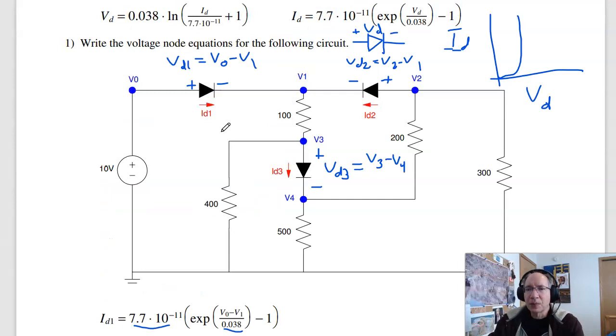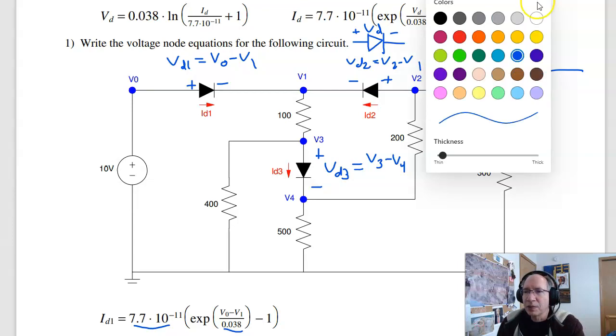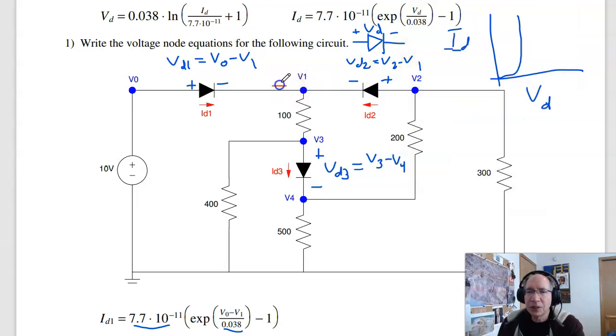The second part is write the node equations. So just like we did before, for conservation of current, the currents have to add to 0. So in node 1, the current left, current down, current right equals 0. The current left is just minus ID1. So I know that minus ID1, current down, is V1 minus V3 over 100. Current right is minus ID2.